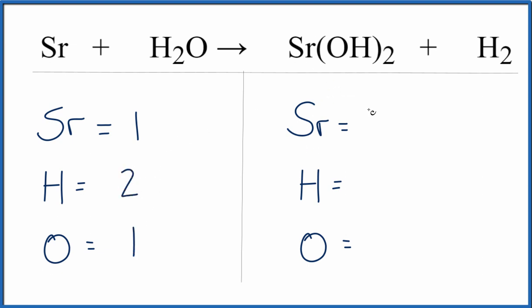Over on the product side, we have our one strontium. This two applies to everything in parentheses, so we have two times the one hydrogen. We have two hydrogens. And don't forget, we have two more hydrogens over here, so it's two plus two. That equals four. That sometimes messes people up with equations like these. And then we have the two times the one oxygen. We have a total of two oxygens.